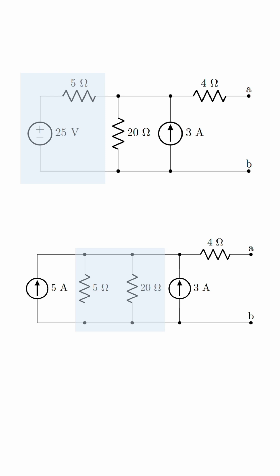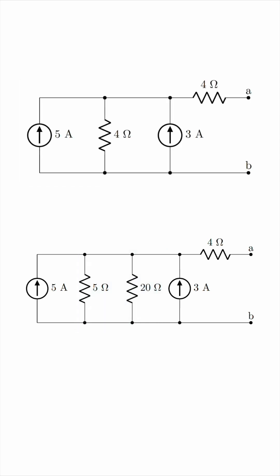5 in parallel with 20 gives 4 Ohms. And now, by our understanding of the circuit, we know that this resistor gets no current, because we have an open circuit, no complete path for the current to flow.